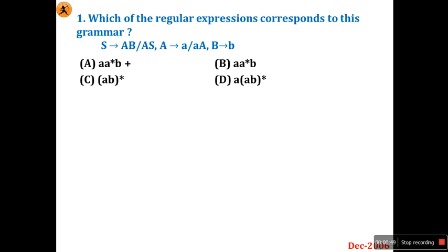Look at this question. They have given 3 productions: S, A, B and A, S. A is a production — one more production: A or A, A. B is one more production — tends to B. They have given 3 productions.